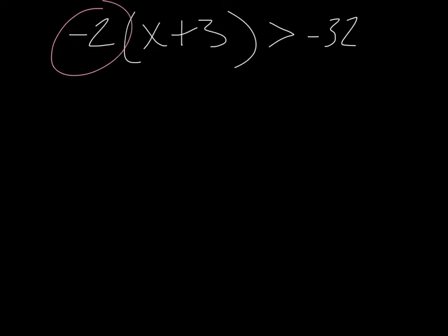Now if you wanted, you could distribute that in there and then solve it. I think it's easier, it takes out that distributive step if you just get rid of the negative 2. So I'm just going to divide both sides by negative 2.